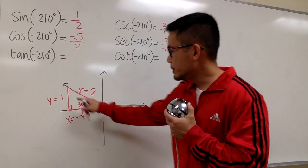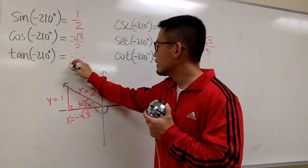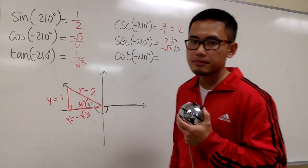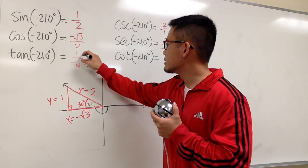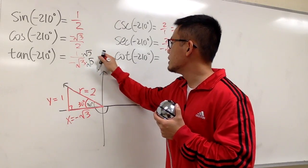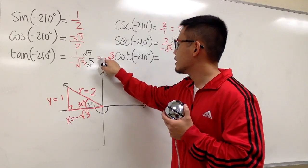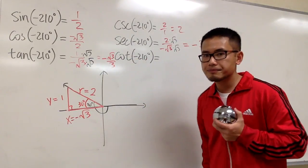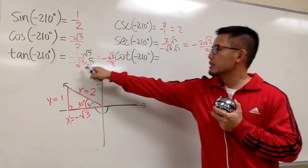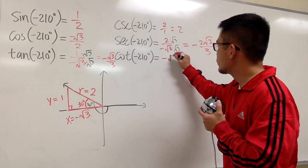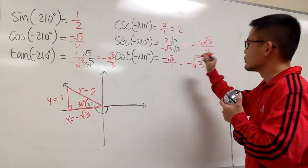Tangent is going to be y over x, so we have 1 over negative square root of 3. And we will end up with negative square root of 3 over 3. The last one, cotangent, is just going to be x over y — negative square root of 3 over 1, which is just the same as negative square root of 3.